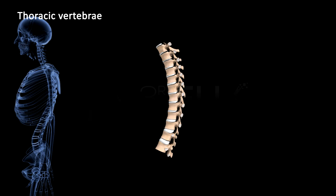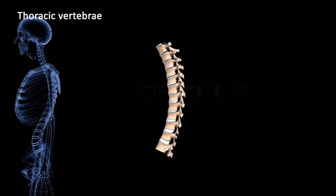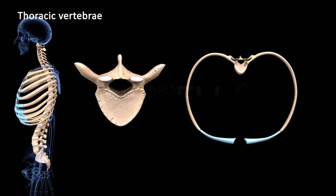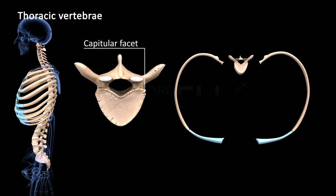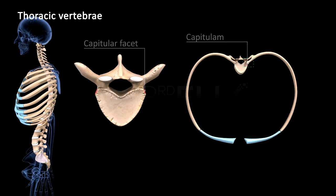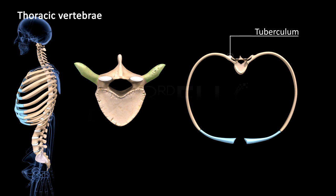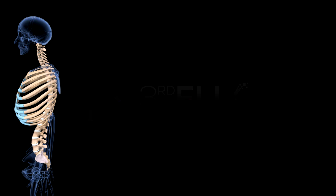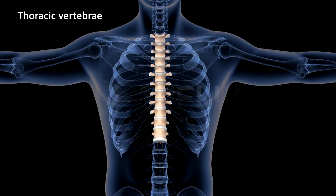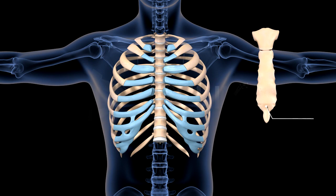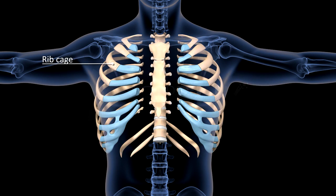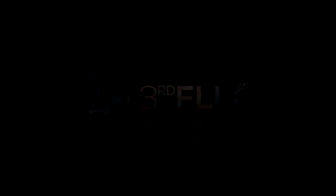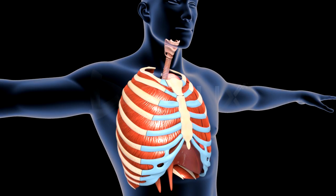There are 12 thoracic vertebrae in the thoracic region. The centrum of each thoracic vertebra has a capitular facet on either side for articulation with the capitulum of the rib. Each transverse process bears a tubercular facet for articulation with the tuberculum of the rib. The thoracic vertebrae, along with the 12 pairs of ribs and the sternum, form the rib cage, which protects the heart and lungs and also brings about ventilation movements during breathing.